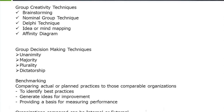Group decision-making techniques include unanimity, majority, plurality, and dictatorship. Plurality means the largest group present in the decision-making process — whatever they agree on is taken up.